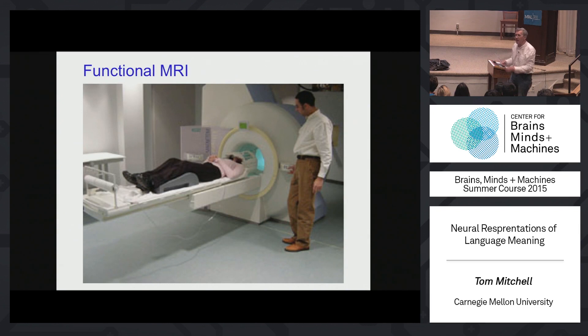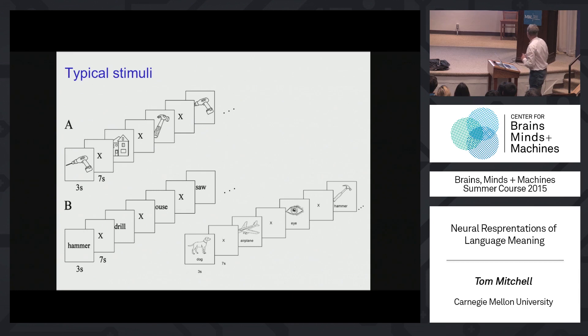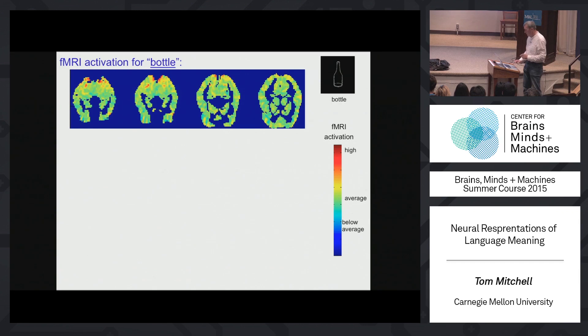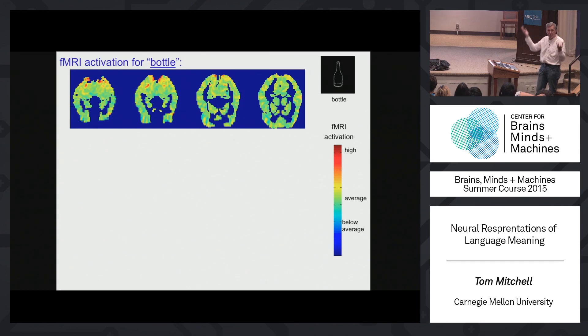We started out by showing people in a scanner stimuli like these — maybe single words, initially nouns like hammer, drill, house, and saw. Sometimes pictures, sometimes pictures with words under them — just showing people stimuli to get them to think about some concept. Then we collect a brain image like this one, which we collected when a person was looking at the stimulus 'bottle.' This is posterior at the top, the front of the head at the bottom, and these four slices are four out of about 22 slices of the brain. You can see what the brain activity looks like — kind of blotchy — when one particular person thinks about 'bottle.'